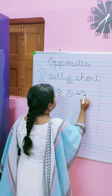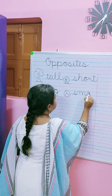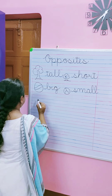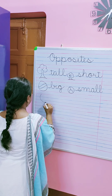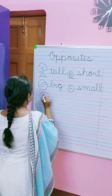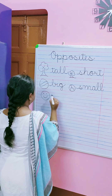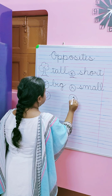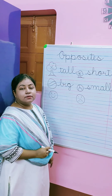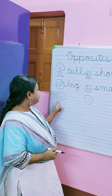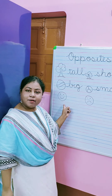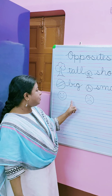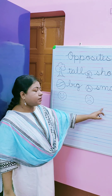Now I will draw a face. One more face. So children, you can see this is a happy face and this is a sad face. So I will write here happy and sad.